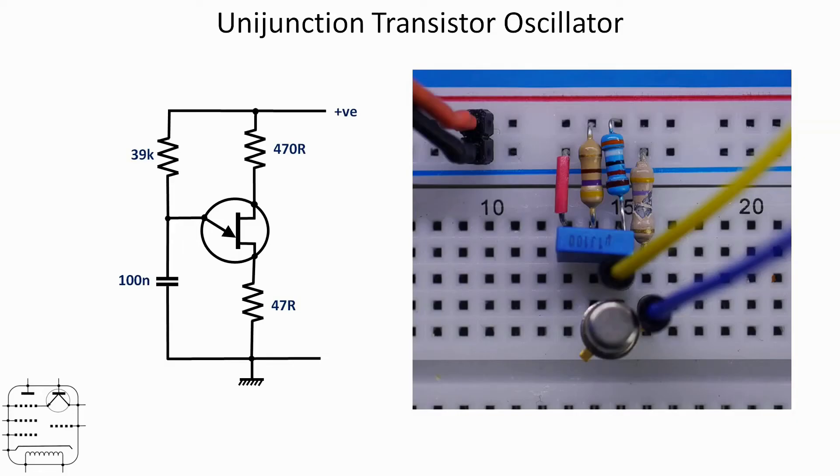Let's take two readings from it. The yellow fly lead and the blue fly lead we're going to look at what's happening on the emitter, and we're also going to look what's happening on the lower of the two bases, which is base one in this case. Let's go and have a look at that on the breadboard.